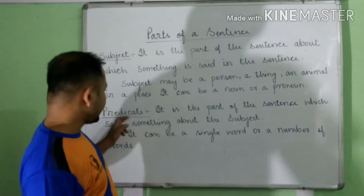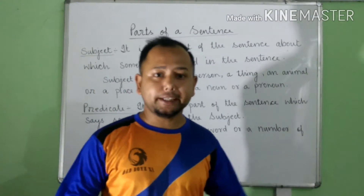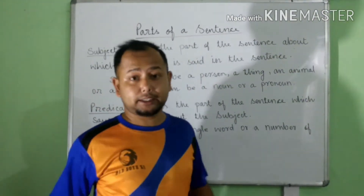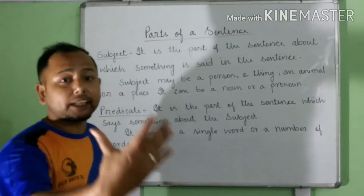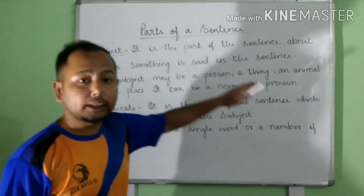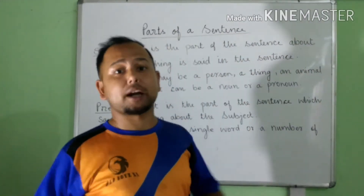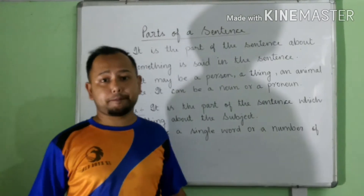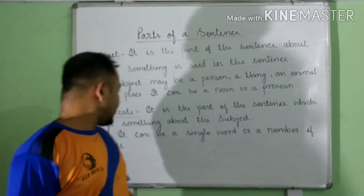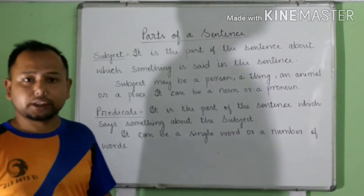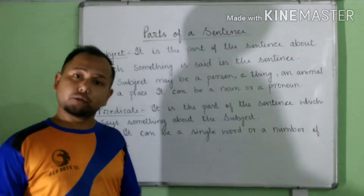Predicate is the part of the sentence which says something about the subject. It is also a part of a sentence. Predicate can be a single word or a number of words.